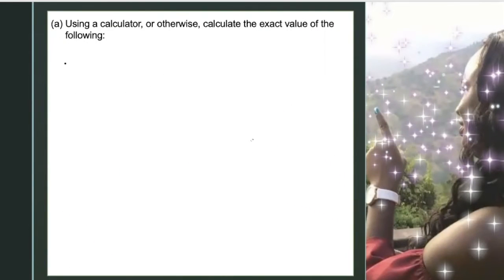The question requires us to use a calculator or otherwise calculate the exact value of the following: 4 and 1/5 multiplied by 1/3 minus 1 over 1 and 1/4.